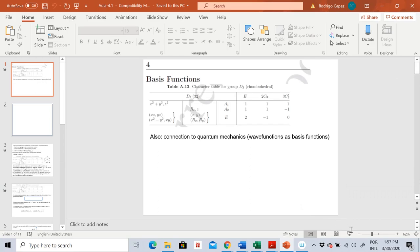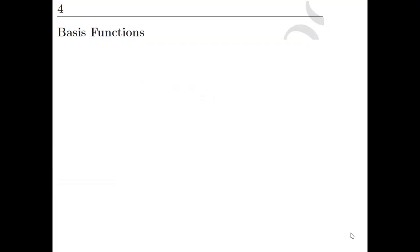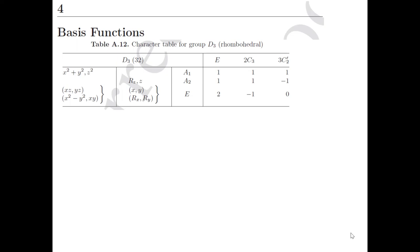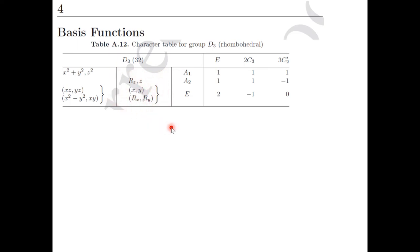This is lecture 4.1 of the group theory class, the first lecture of chapter 4. This chapter is about basis functions. We have seen basis functions already in the previous chapter when we looked at character tables. For instance, this is a character table of the group D3. We see the classes, the irreducible representations, and on the left-hand side we had some different functions — these are precisely the basis functions. Associated to each irreducible representation we have a set of functions that we call basis functions.